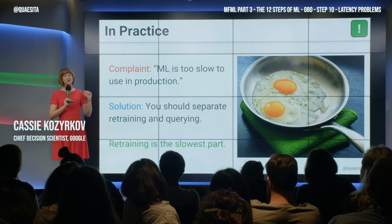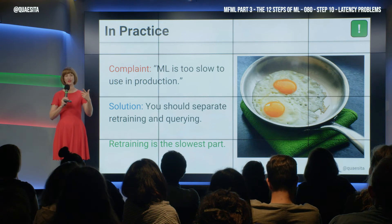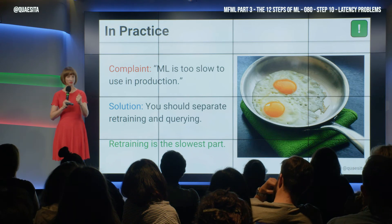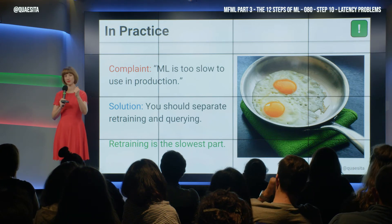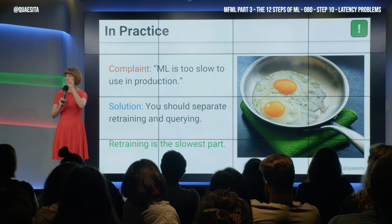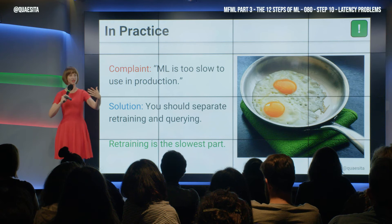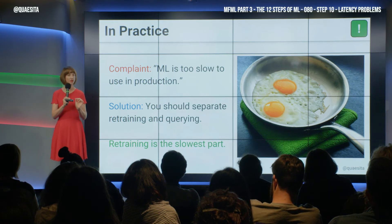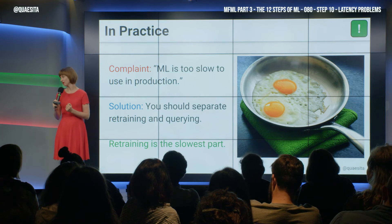The retraining part is the slowest part. And so if you insist on doing things in the following way — the user comes and wants something from you, you've just finished with the previous user, you've just gotten the data from the previous user — if you now take that data point and start retraining the whole thing based on that data point, and you say to the current user, whoa, wait five minutes while I make my adjustments, then of course the user is going to be long gone.